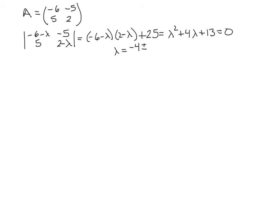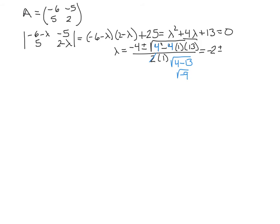Using the quadratic formula: negative 4 plus or minus the square root of 16 minus 4 times 1 times 13, all over 2. Factoring out a 4 under the radical gives a factor of 2 outside, leaving 4 minus 13 equals negative 9 under the root. So we get negative 2 plus or minus the square root of negative 9, which gives lambda equals negative 2 plus or minus 3i.